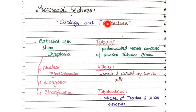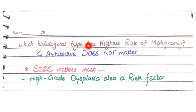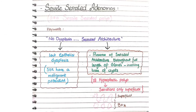To revise: cytologically, colonic adenomas show dysplasia manifested as nuclear hyperchromasia, nuclear elongation, and nuclear stratification. Architecturally, they can be tubular, villous, or tubulovillous. Importantly, the architecture does not determine malignancy risk. What matters is the size of the tumor — greater size means greater malignancy risk — and the degree of dysplasia; high-grade dysplasia carries more risk than low-grade dysplasia.